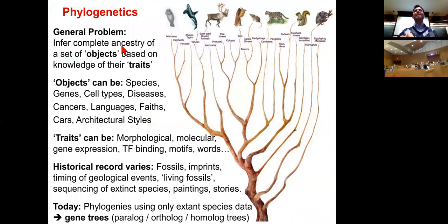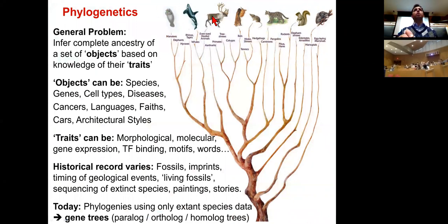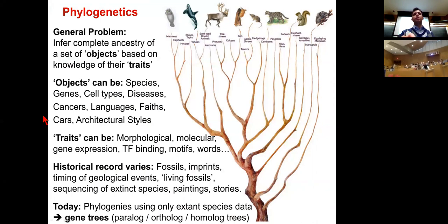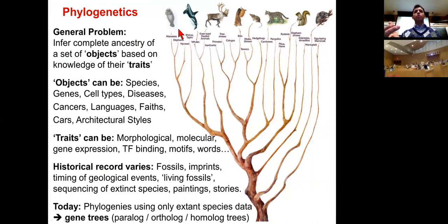Phylogenetics is the study of inferring the complete ancestry of a set of objects based on knowledge of their traits. We measure a bunch of features about objects at the leaves and infer their relationships. These objects can be species, genes, cell types, diseases, types of cancer, languages, cars, or different textual styles — for each you extract sets of features and infer relationships.